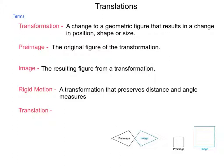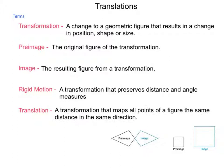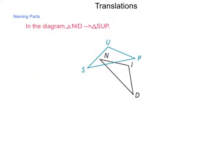Now, specifically in this lesson, we're going to be taking a look at a type of transformation called a translation. A translation is a transformation that maps all points of a figure the same distance in the same direction. Basically, you're just moving it around whatever field you have to work with. Let's take a look a little bit more at translations specifically. In the diagram, triangle NID is translated into, or transformed into, triangle SUP. And what we want to do is go through and take a look at, from the preimage and image, what each of the corresponding parts are.